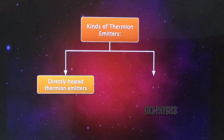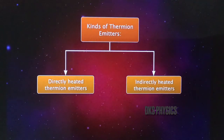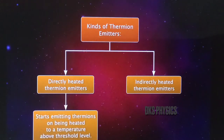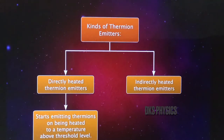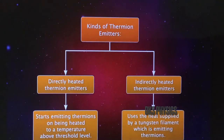There are two kinds of thermion emitters: directly heated thermion emitters and indirectly heated thermion emitters. A directly heated thermion emitter starts emitting thermions on being heated with the passage of electric current to a temperature above threshold level. An example is the tungsten filament. Indirectly heated thermion emitters use heat supplied to materials with a low work function. Examples are thoriated carbon and alkali metal oxide emitters.